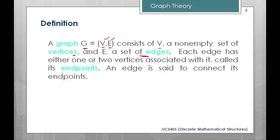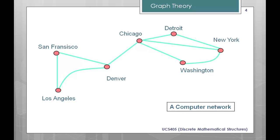Each edge has one or two vertices associated with it, which are also called endpoints, and an edge is said to connect its endpoints. See this simple graph — these are the cities, or we can say these are the vertices, and these are the edges. The green ones are the edges and the red nodes are the vertices. This is an example of a computer network, or we can say this is a graph.